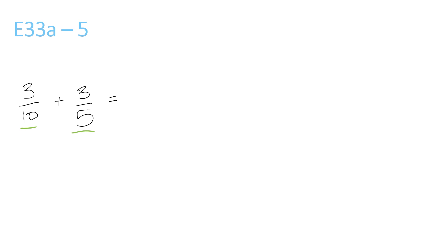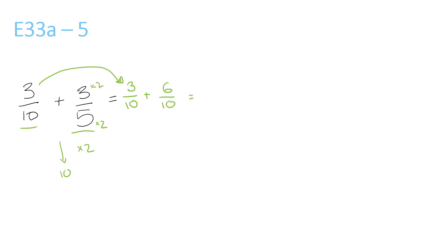The number that 10 and 5 both go into is 10. 5 times 2 is 10. We bring the 3 over 10 here because it stays the same. Now the 3 over 5 — because 5 times 2 is 10, we do 3 times 2, and that's 6 over 10. So 3 plus 6 is 9 over 10.